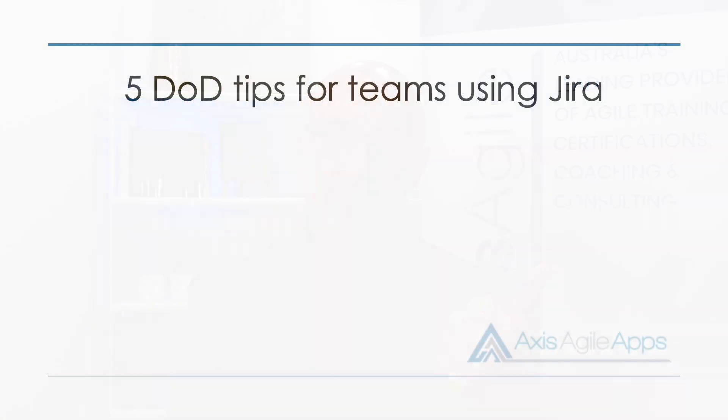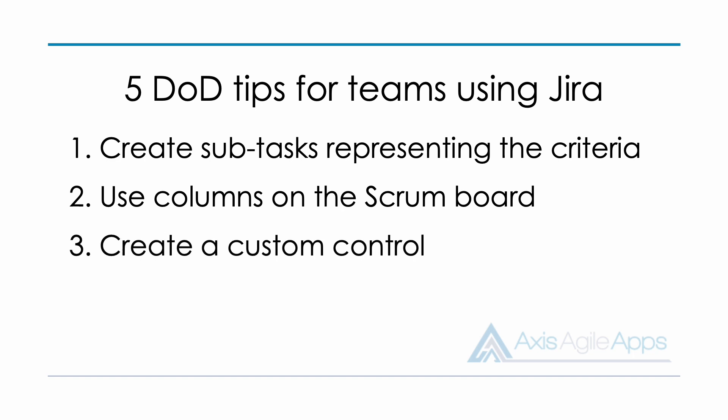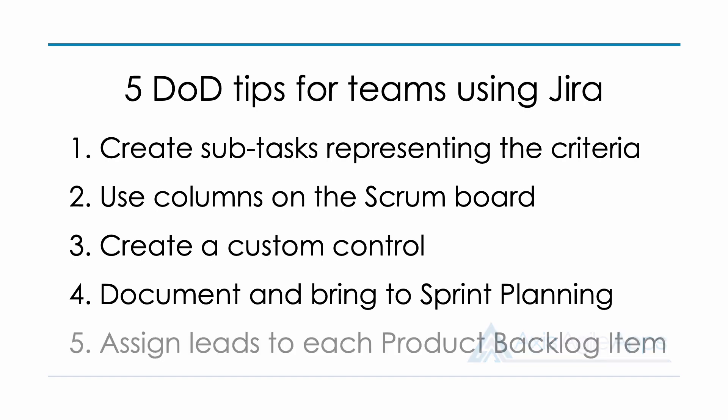So there you have it — five tips to get your team to complete their definition of done when they use JIRA. Firstly, get them to create subtasks for each of the criteria. Secondly, use the columns on the scrum board. Thirdly, create a custom control. Fourth, document it in Confluence and remind the team of the definition of done at the sprint planning session. And lastly, number five was to assign a lead to each product backlog item, and that lead takes responsibility for making sure the DOD has been met.